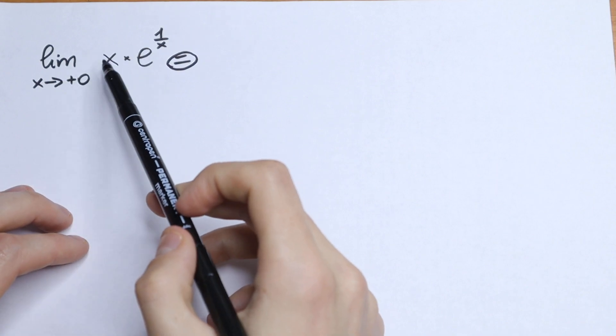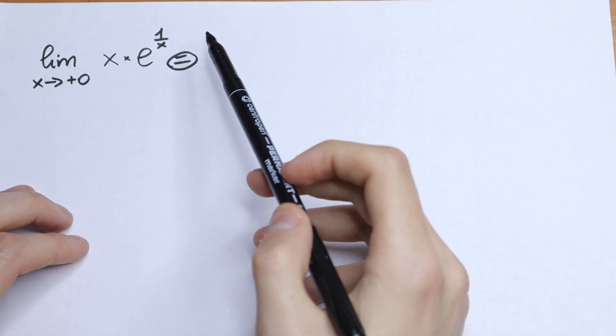What is the limit as x approaches 2 plus 0 of the function x times e to the power 1 over x?